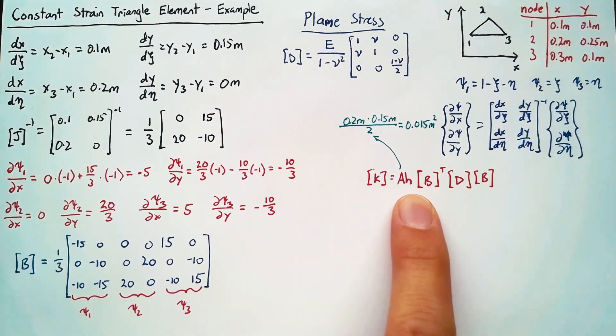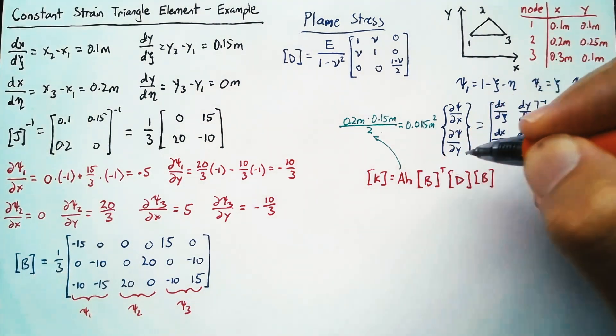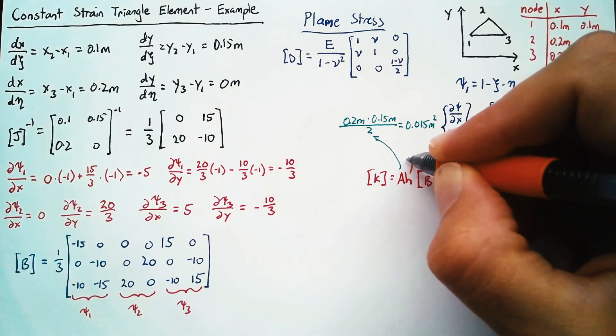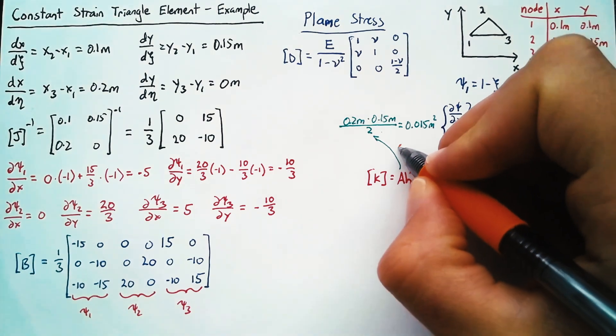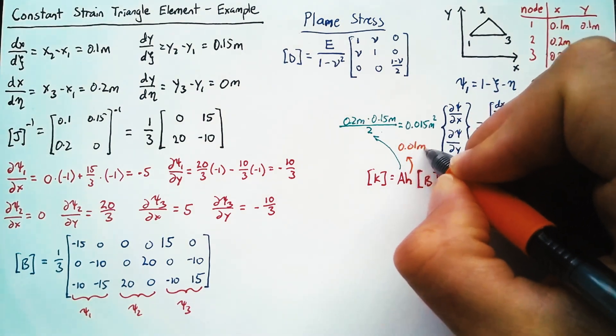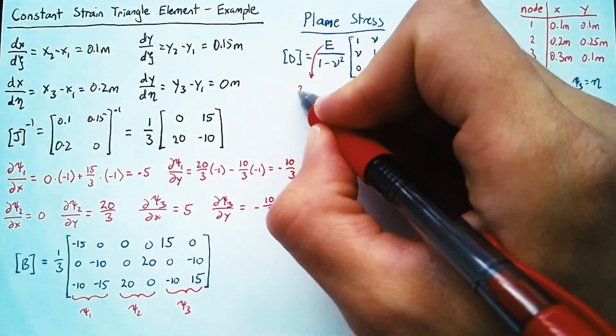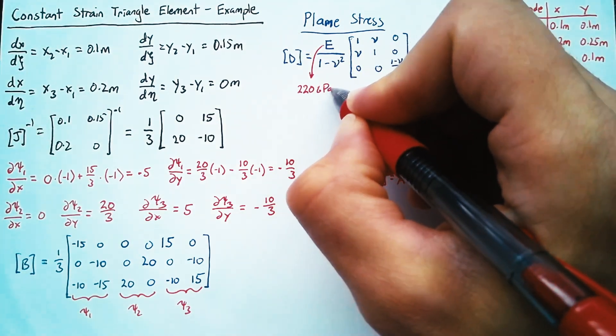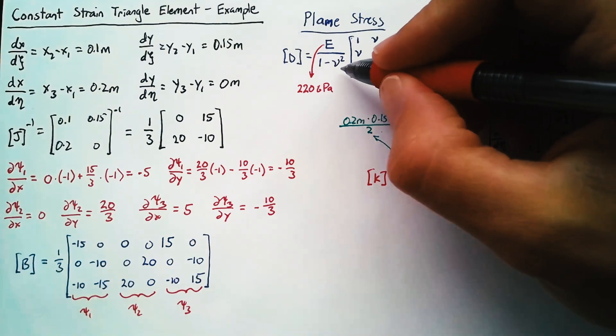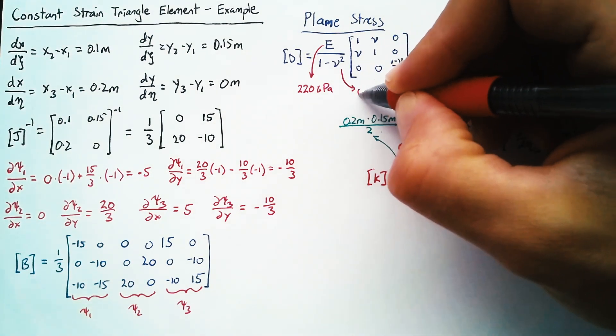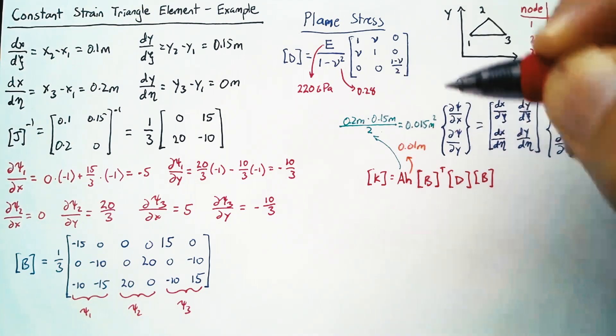Our height we have yet to define, so let's give that a value. And this does need to be a thin plate, so this should be rather small. So let's set a height of 0.01 meters. For Young's modulus, let's make this steel. So this is going to be 220 GPa. And then we can use a value of 0.28 for our Poisson's ratio.